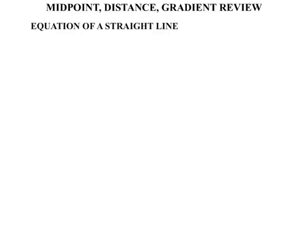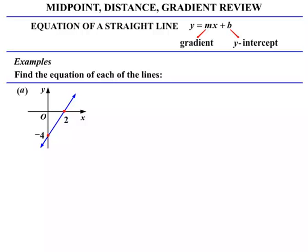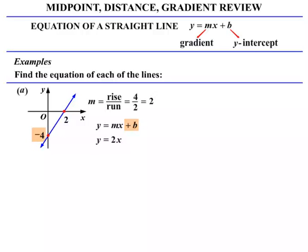Now the equation of a straight line: Y equals MX plus B, where M is the gradient and B is the Y intercept. In part A we have a diagram where the line cuts at -4 on the Y axis and 2 on the X axis. The gradient, rise over run: the rise is 4, the run is 2, so it's 4 over 2, which is positive and simplifies to 2. Using Y equals MX plus B: Y equals 2X, and B is the Y intercept which is -4. So the equation is Y equals 2X minus 4.